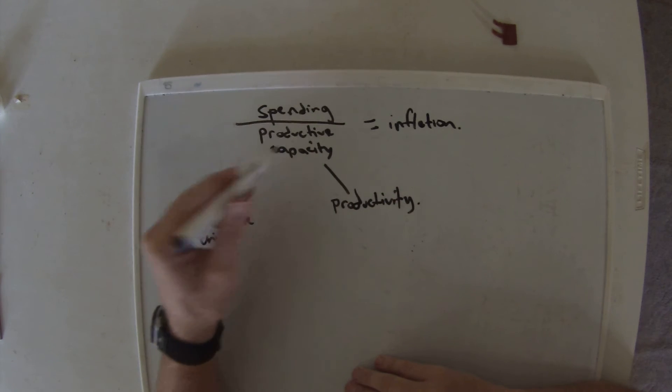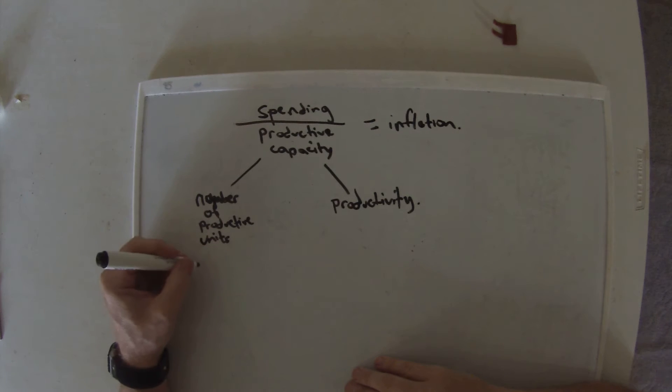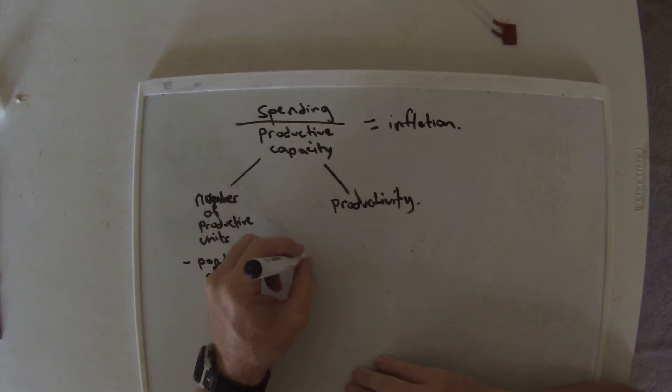A good proxy for the number of productive units I just use as population. You can also consider the population of the animals that are food, the amount of plants that are grain crops, and productive machines as well. But generally the human population of people is the best proxy for that part.